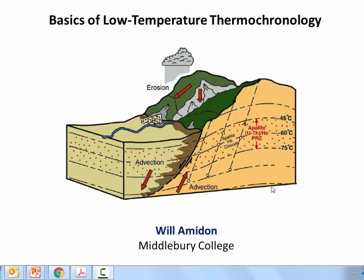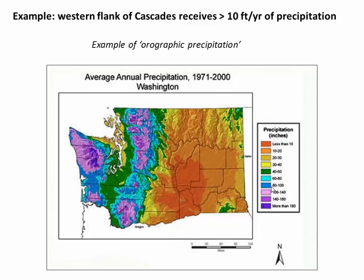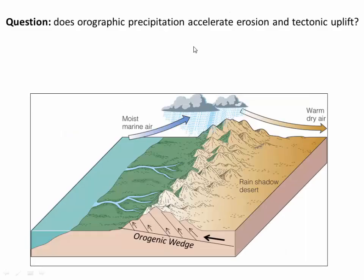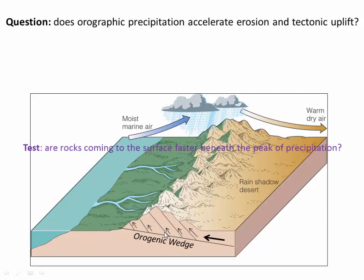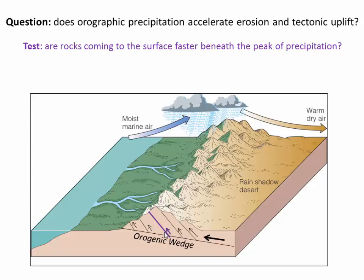I'll motivate this video by taking a look at the Cascades of Western Washington. The high topography of the Cascades receives up to 10 feet per year of precipitation as moist air masses flow off the Pacific and encounter the rugged topography of the Cascade Mountains. This is an example of orographic precipitation, in which air masses essentially dump their moisture on the windward side of the mountain range. If this extra precipitation drives faster erosion rates, it can actually cause unloading of underlying faults, which can then slip.